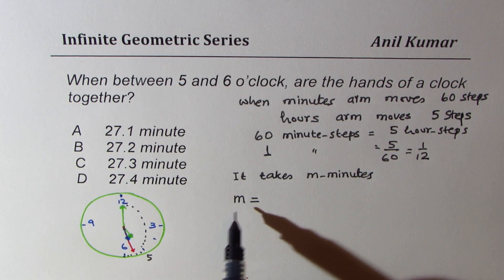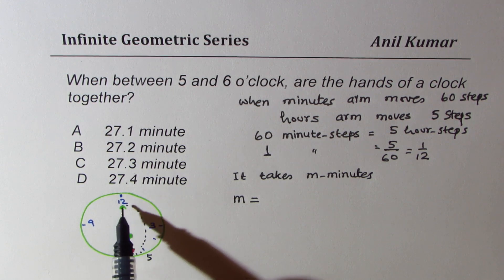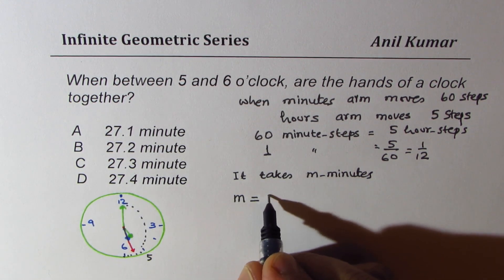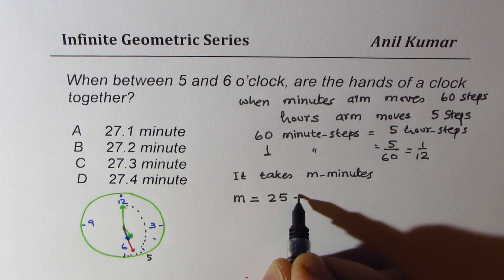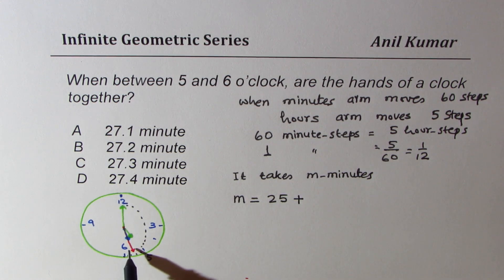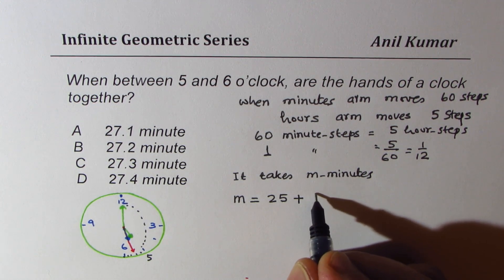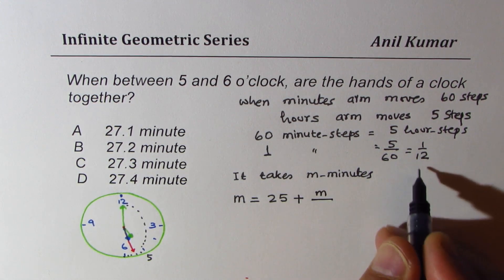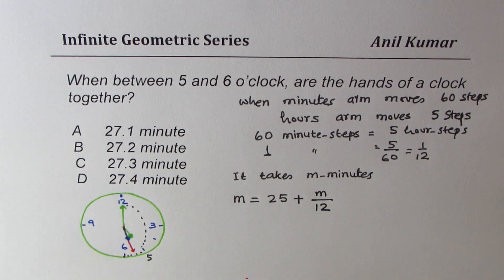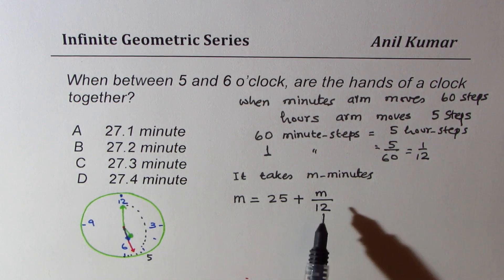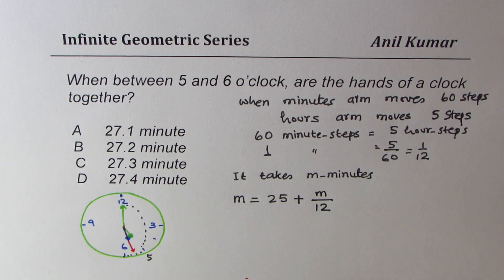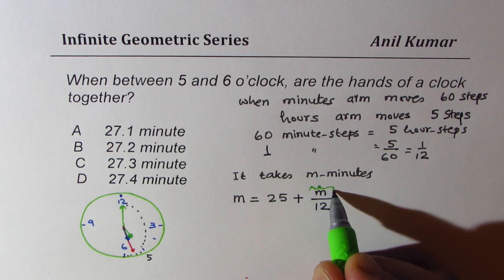In m minutes, these steps will be how many? First we'll take from 12 to 5, which is 25 steps, plus how much did the hour move? It moved m times 1 over 12. It moved m times 1 over 12, right? So this is the distance which was moved by the hour, because it moves 1/12 of every minute.